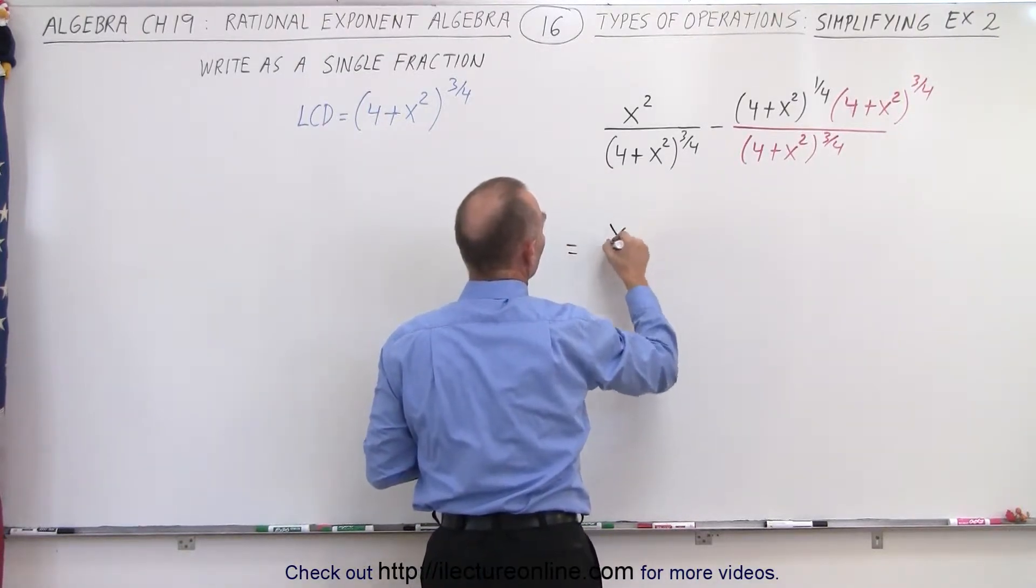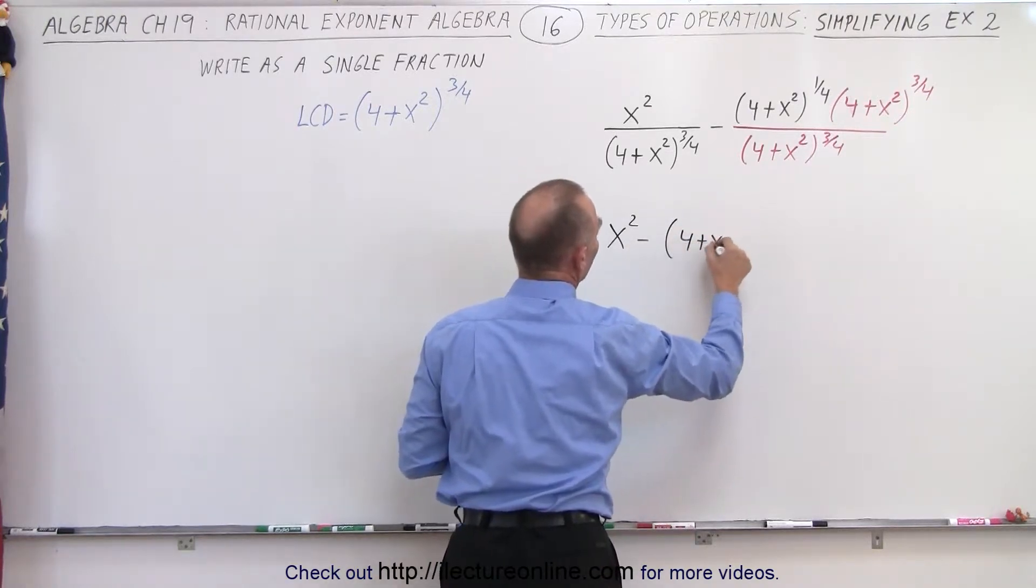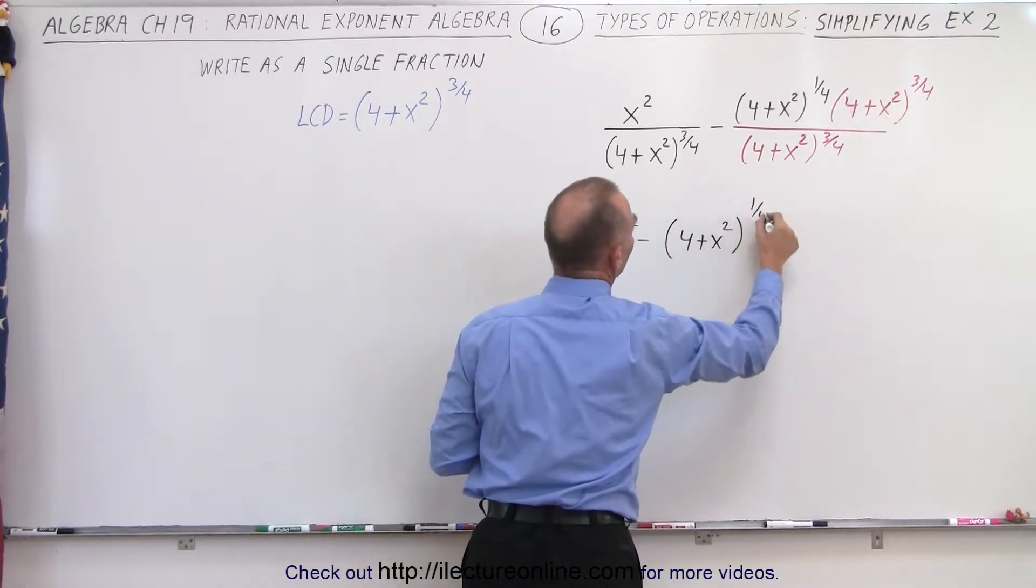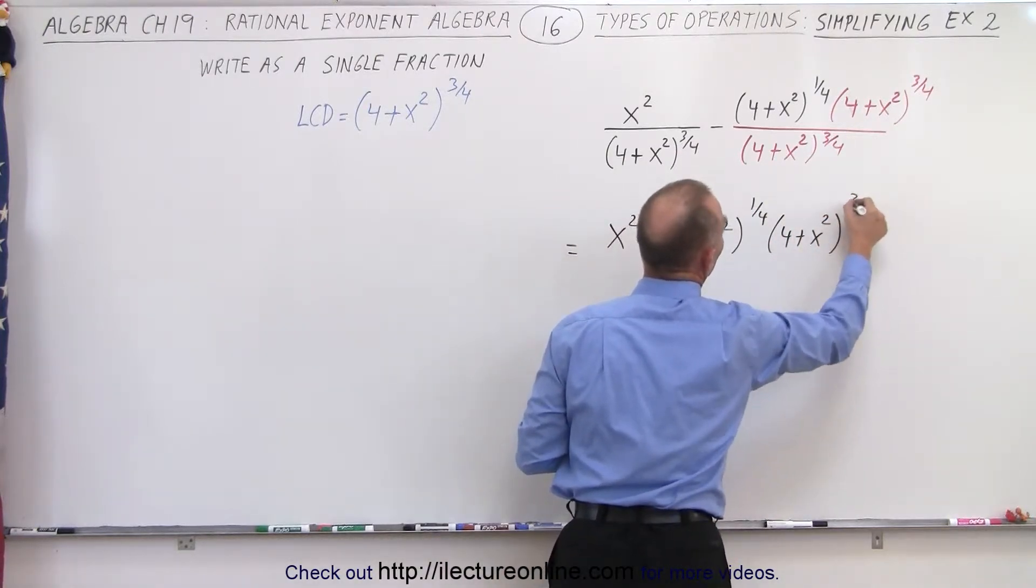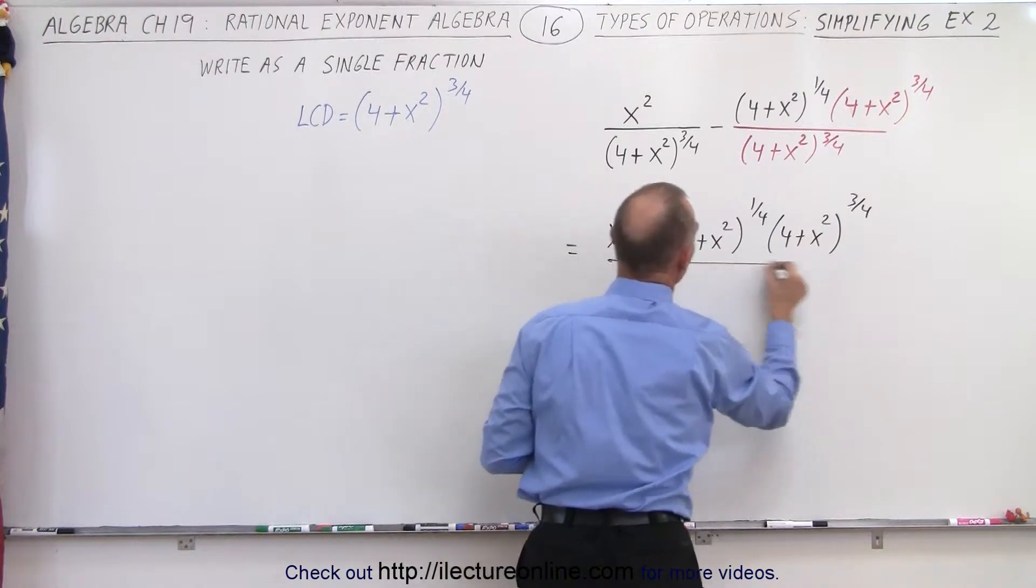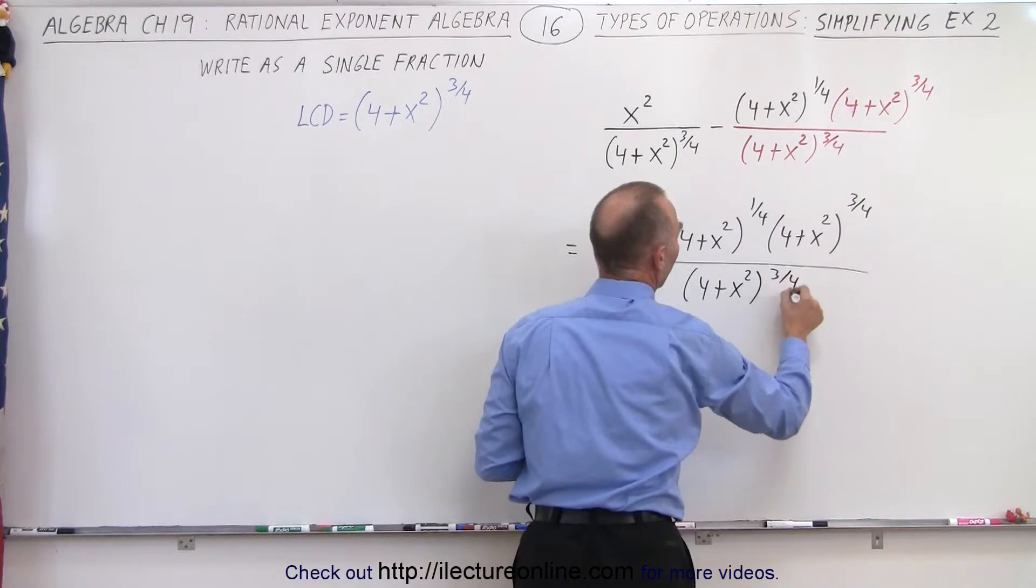So this can be written as x² minus the quantity (4+x²) to the 1/4 power times (4+x²) to the 3/4 power, all over a common denominator of (4+x²) to the 3/4 power.